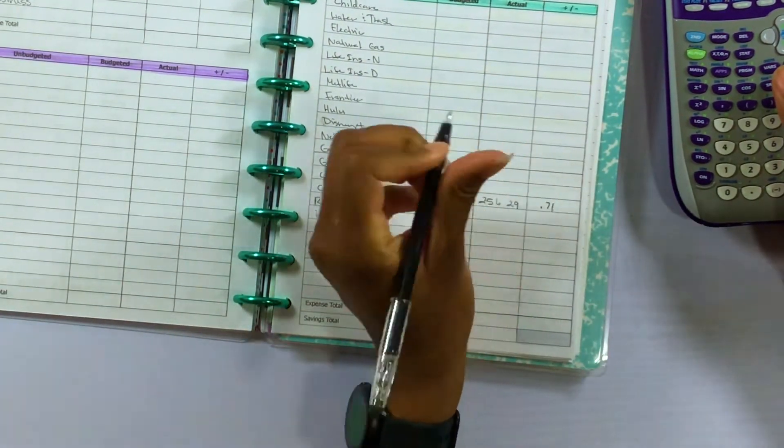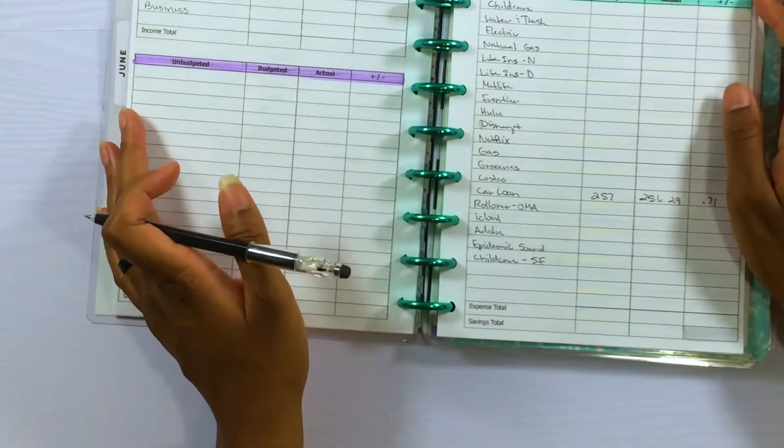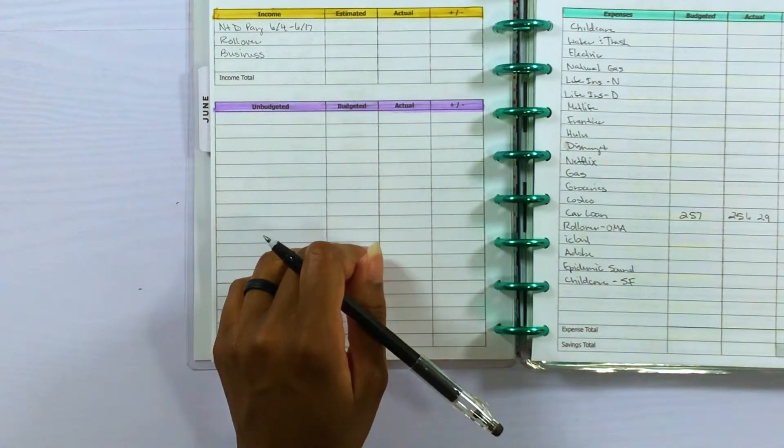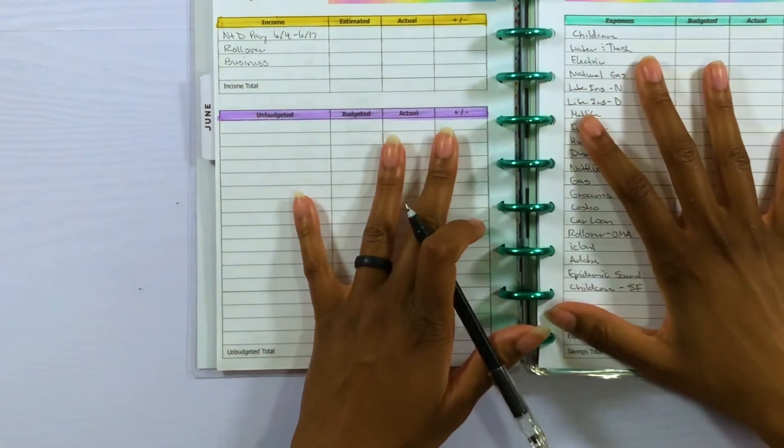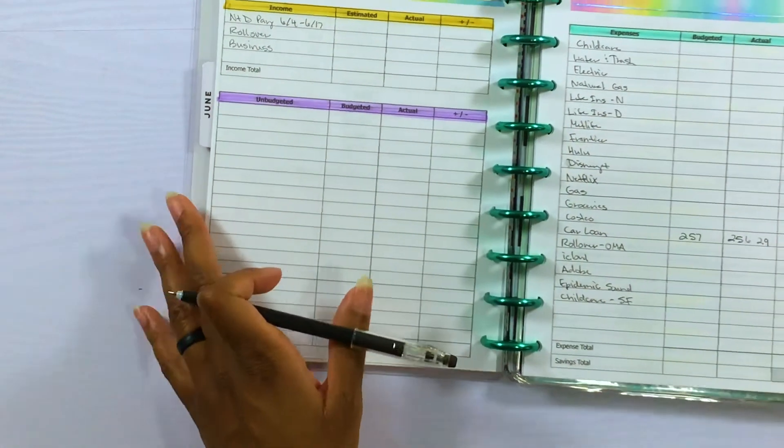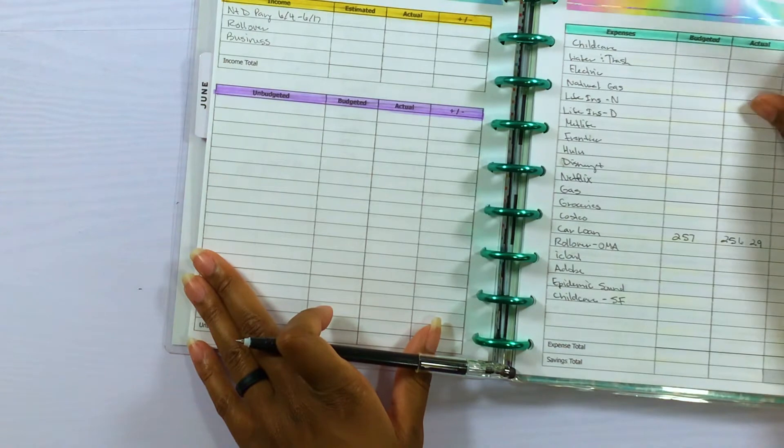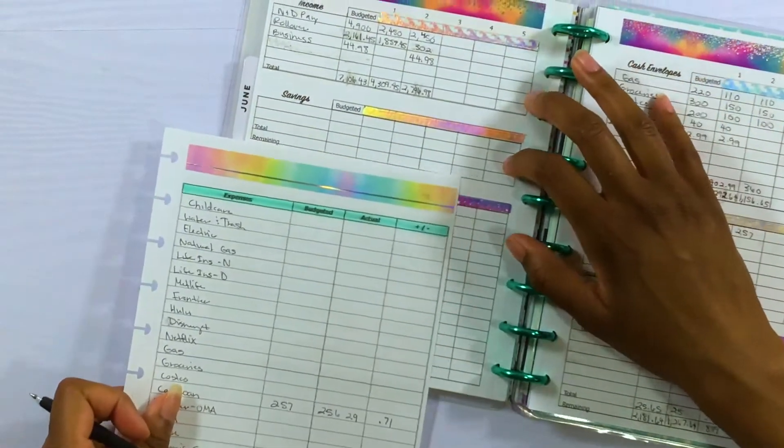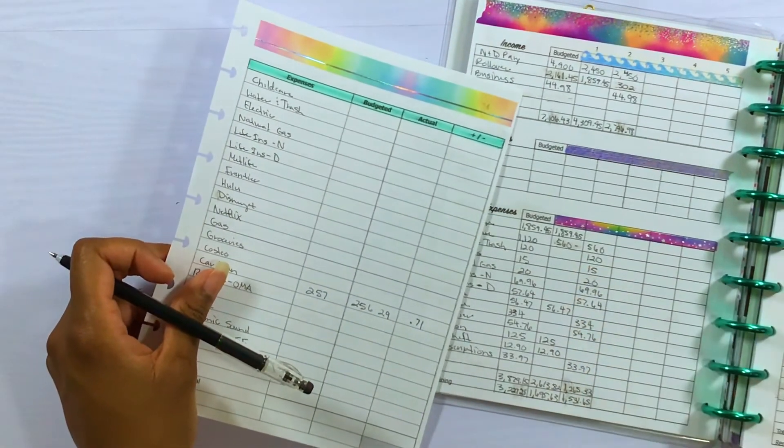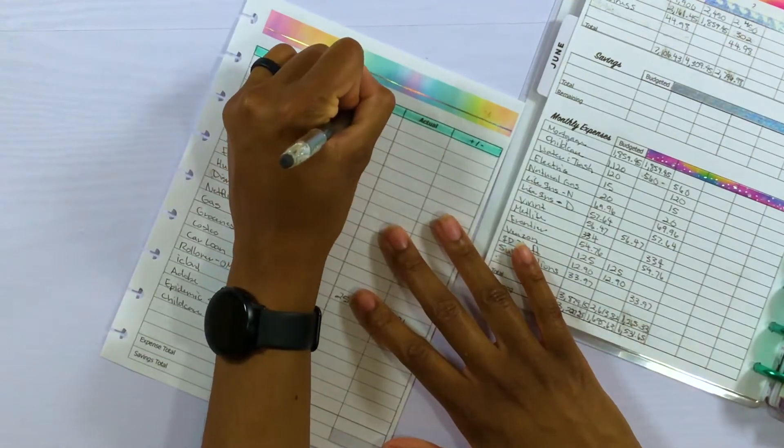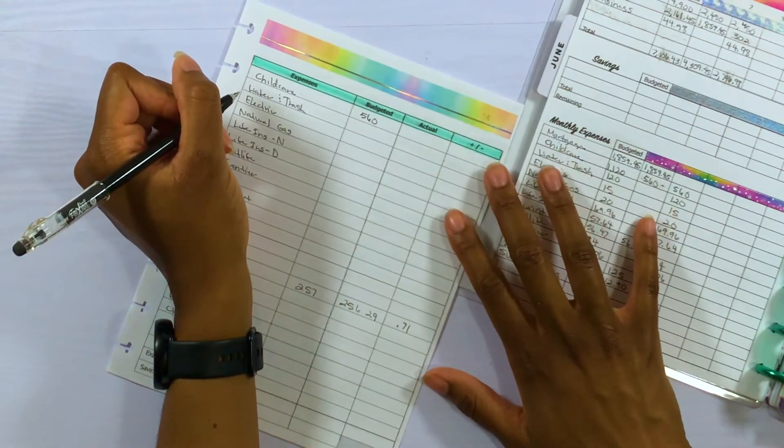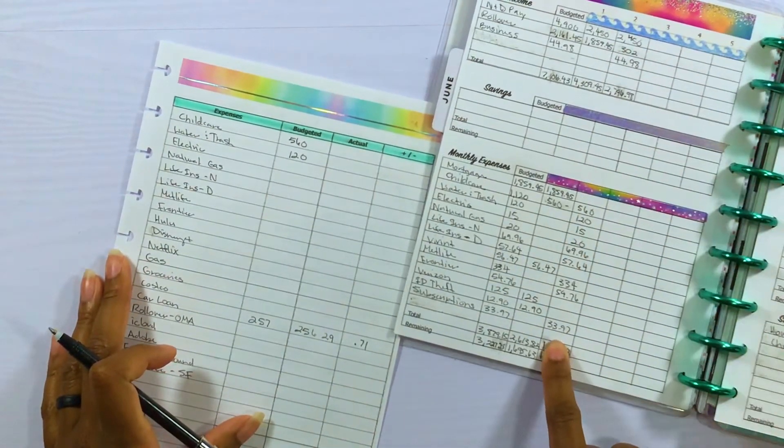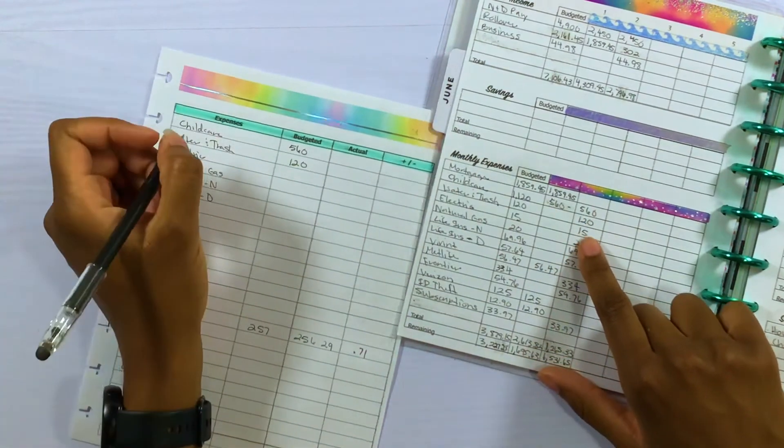So I can go ahead and do that difference now actually. So 71 cents here. All right, so backtracking a little bit, I already wrote the expenses and the income, and then again this section is just for any unbudgeted expenses that occur during this pay period, and this pay period is from June 4th through June 17th. So let me go ahead and write the budgeted amounts for the expenses.